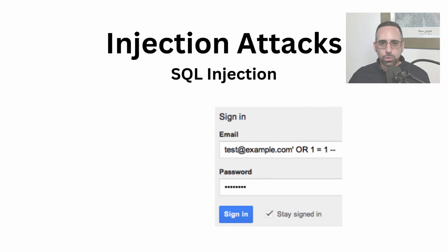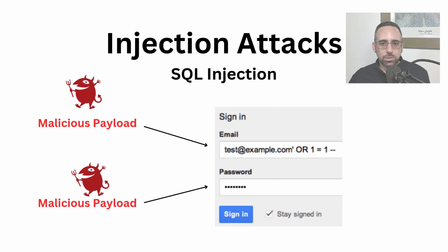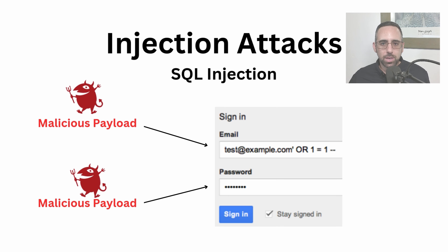A classic example of an injection attack is called SQL injection. We see a login page with a web form asking us to provide some input — an email address and a password, which is pretty typical. As a security practitioner, it's very important that you understand it's never really guaranteed that a user would provide a valid input or actually enter a real email address or password. Nothing is preventing the user from just typing a comma, a single quote, a command, or anything really.